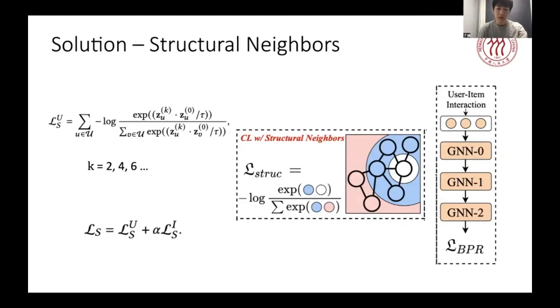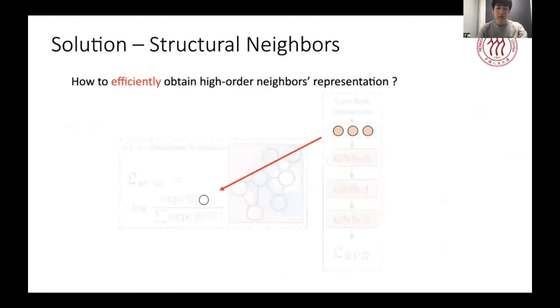Then a problem arises. How to efficiently obtain high-order neighbors' representation? Directly using matrix multiplication to get a homogeneous graph of users or items is costly. So we utilize the output of an even GNN layer to gather representation. For node representations, we just use the raw input embedding vectors. And for the representation of high-order neighbors, we use the output vectors after propagating for even times, such as 2 or 4.